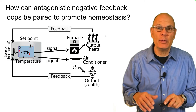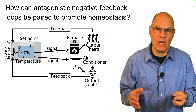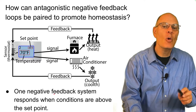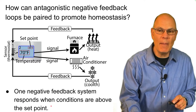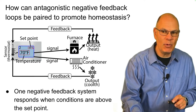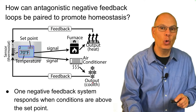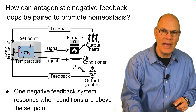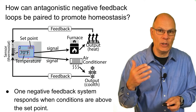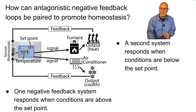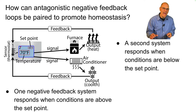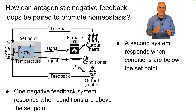Antagonistic negative feedback loops can be paired to promote homeostasis. With the same goal of keeping temperature at 68 degrees, one negative feedback system responds when conditions are above the set point: if temperature is 70 and the set point is 68, a signal turns on the air conditioner, which outputs cool air, feeds back, and eventually turns the system off. But we also have a heating system — if temperature goes below the set point, that turns on, releases heat, feeds back, and turns itself off. So we have paired antagonistic systems: one for cooling, one for heating.